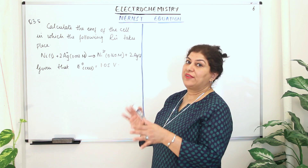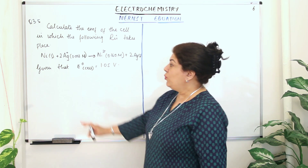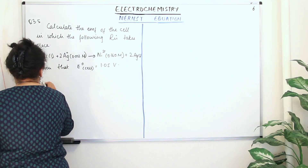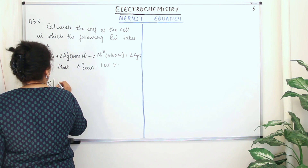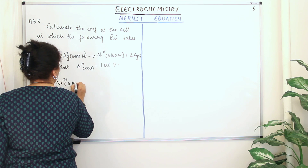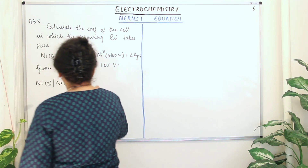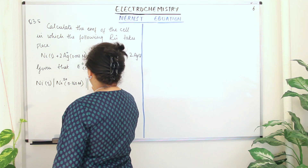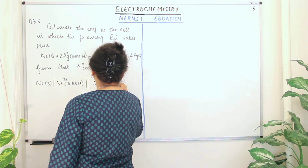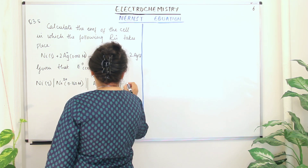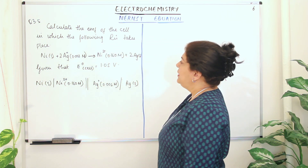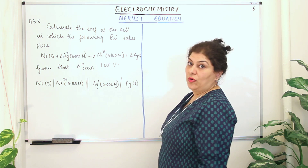We always write the anode to the left and the cathode to the right. Nickel is getting oxidized, so the cell is: Ni(s) | Ni²⁺(0.160 M) || Ag⁺(0.002 M) | Ag(s). We are now expected to calculate the EMF of the cell, and E⁰cell is given as 1.05 volts.